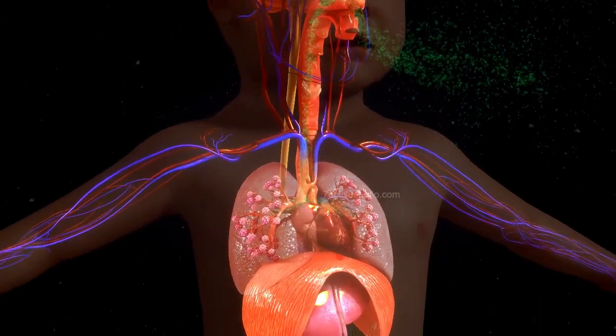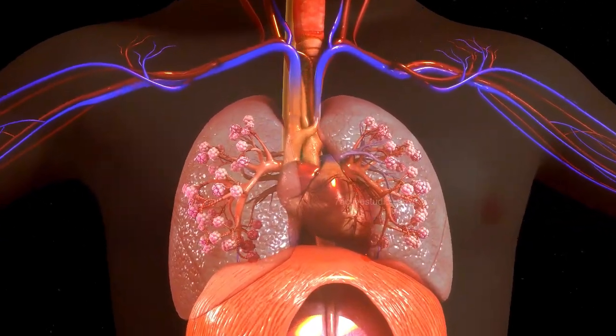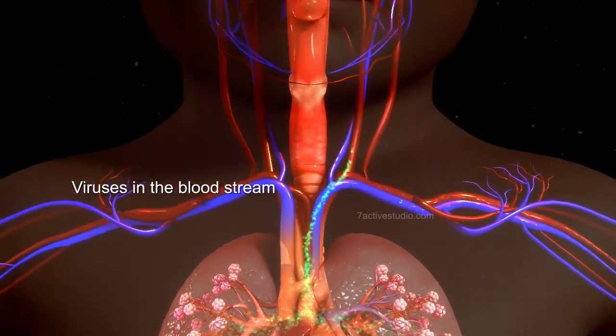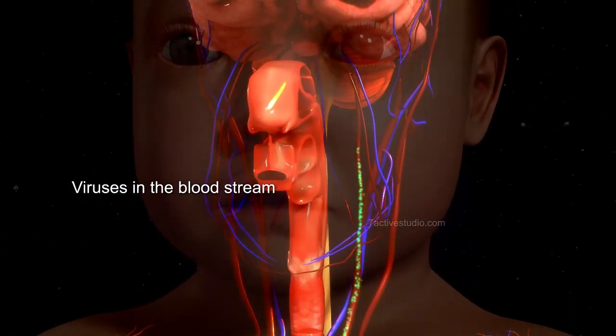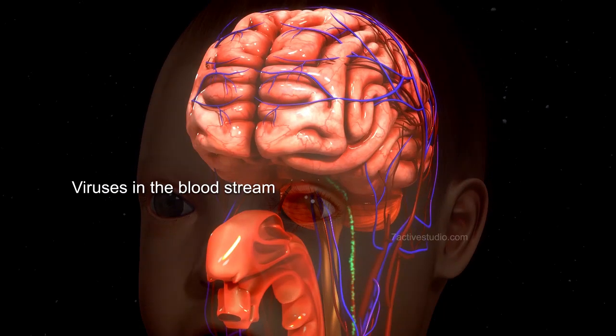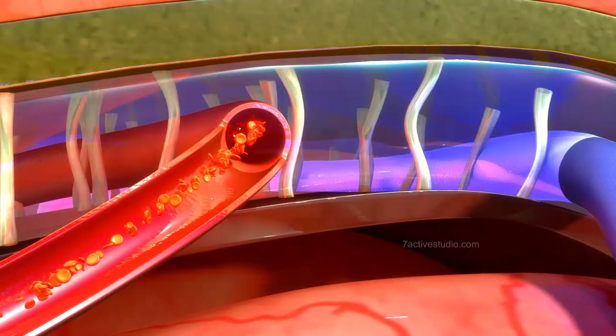the virus makes multiple copies of itself and enters the bloodstream, eventually reaching the brain. Here it crosses the blood-brain barrier to enter the CSF.